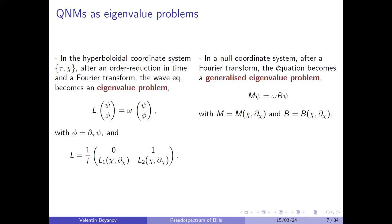In the case where we can use a null coordinate system, we don't need to do an order reduction in time — the equations are already first order in our time parameter. On the other hand, the problem becomes a generalized eigenvalue problem with operators both on the left and right-hand side. The operator is ill-conditioned to be inverted, so we must keep this generalized form.